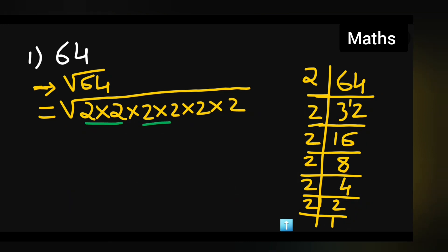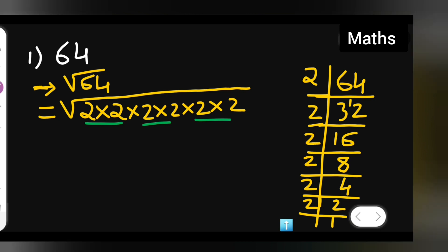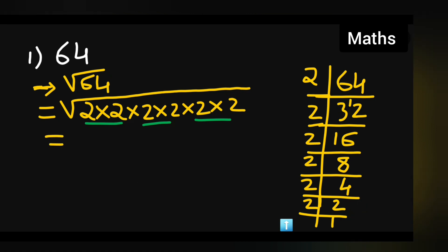They are in pairs. 1, 2, 3. They are in pairs. Now you will have to take the pair outside. 2 multiplied by 2 multiplied by 2, three times, right?